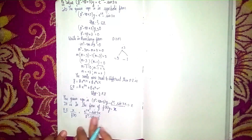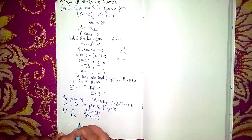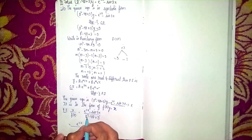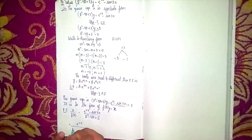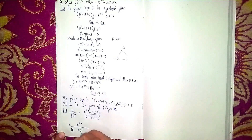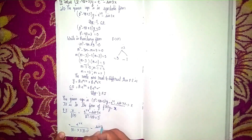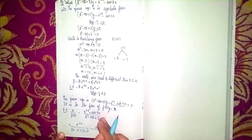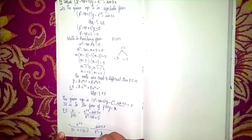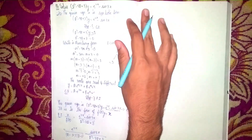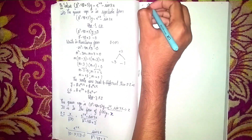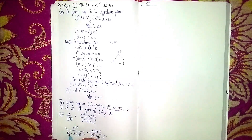Now split this into two separate terms. It becomes e^(2x) / [(D - 3)(D - 1)] minus sin(3x) / (D² - 4D + 3). We use the factored form for the exponential term. For the trigonometric function, we keep the original form D² - 4D + 3 since we can't write factors for it. Now substitute: instead of D, substitute 2 for the exponential term.